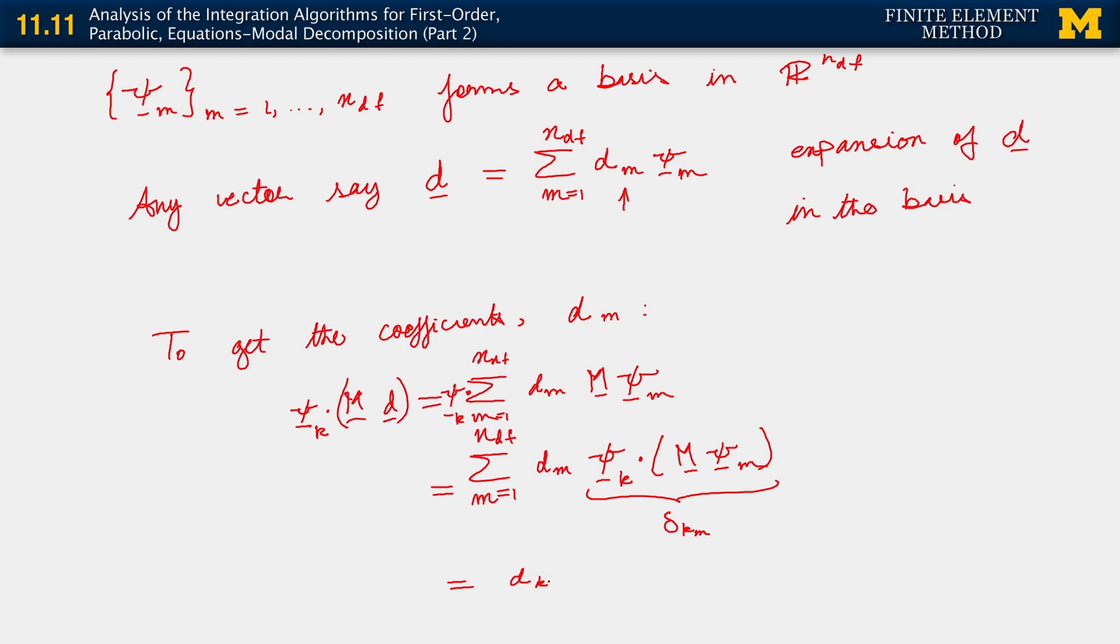But then this, explicitly when we compute the sum, knowing that delta k m is the Kronecker delta, we get d sub k. So here we have a definition for what our coefficients are. These coefficients dk are uniquely defined.